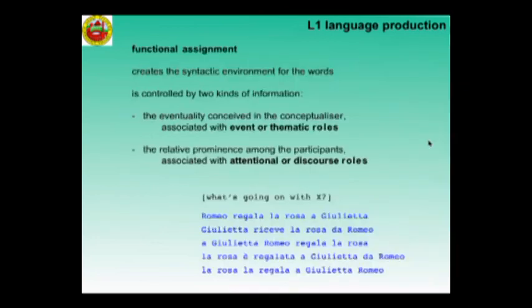Functional assignment is controlled by two kinds of information: the eventuality conceived in the conceptualizer, associated with the thematic roles, and the relative prominence amongst the participants, associated with the attentional or discourse roles. You can have the same eventuality with Romeo and Juliet mapped differently depending on the roles.